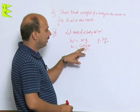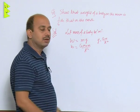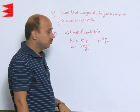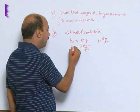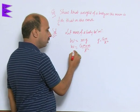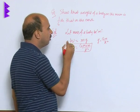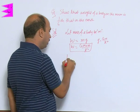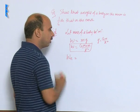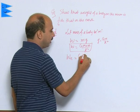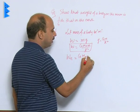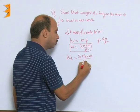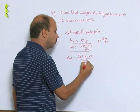So, mass of the planet into mass of the body divided by the square of the radius — this is the weight. This is the formula for weight. Now, weight on the earth of the same body is G times mass of earth (M_E) into M upon the square of the radius of earth.